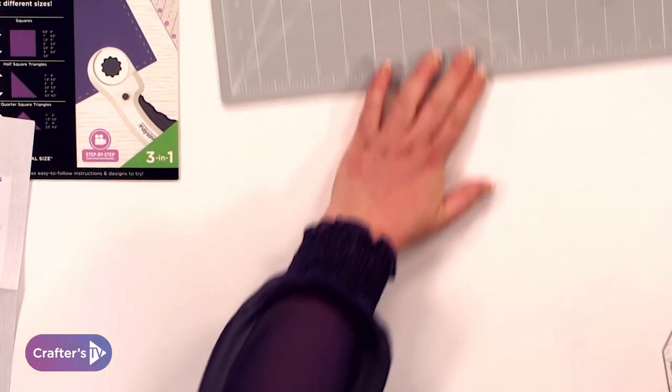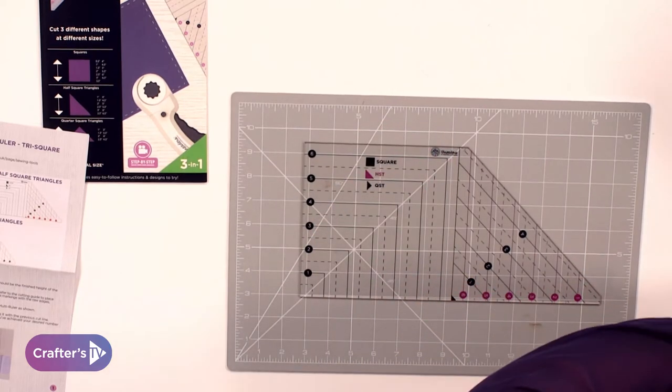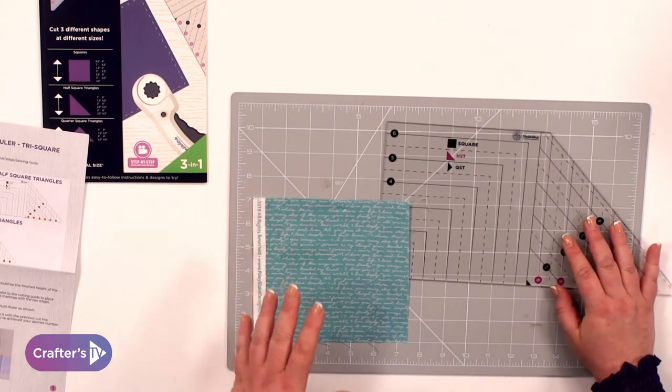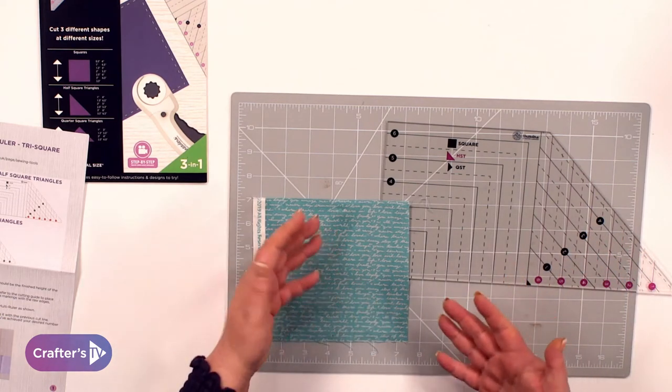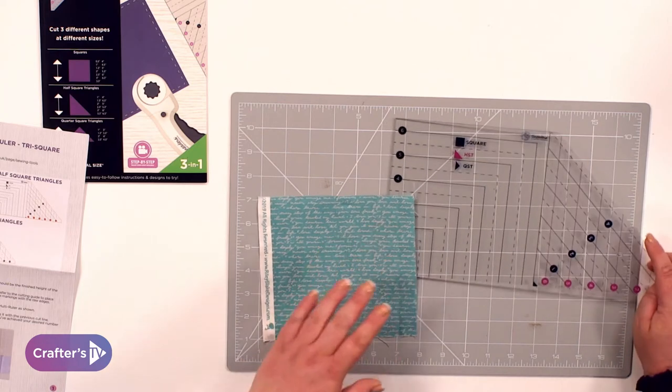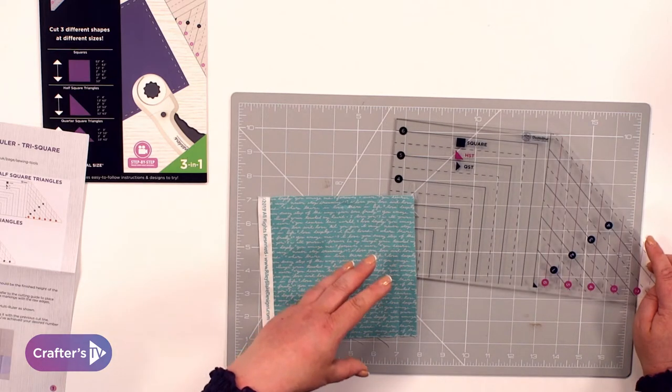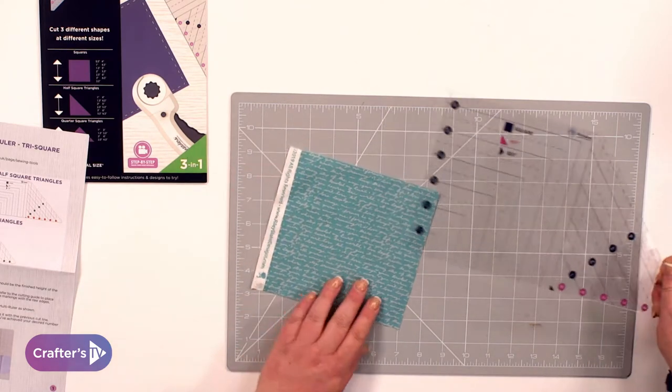I'm going to bring in my cutting mat. First of all, let's cut some squares. You've got an option here. You can either cut one at a time or you can cut multiple layers. If you're a total beginner, I would say to cut one layer first and then build up to a few layers until you feel confident with a rotary cutter.